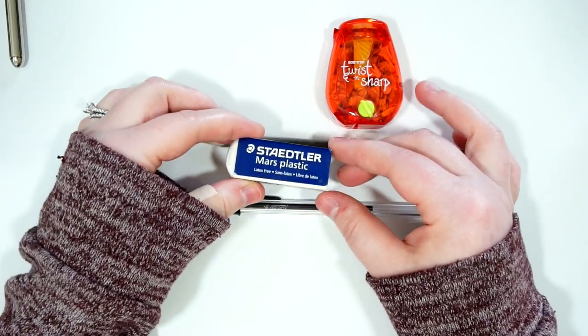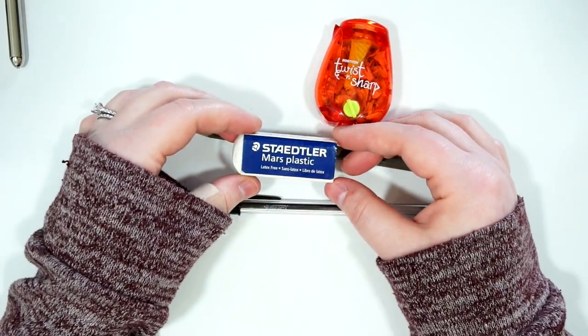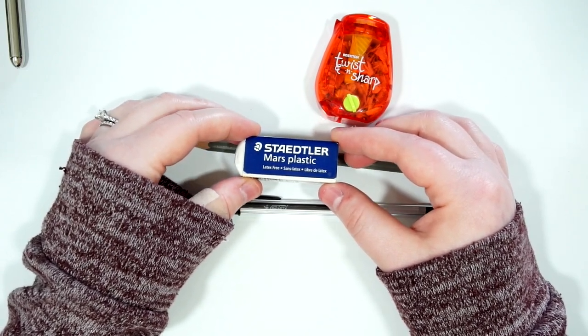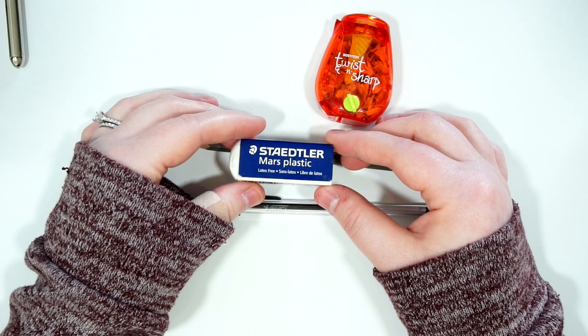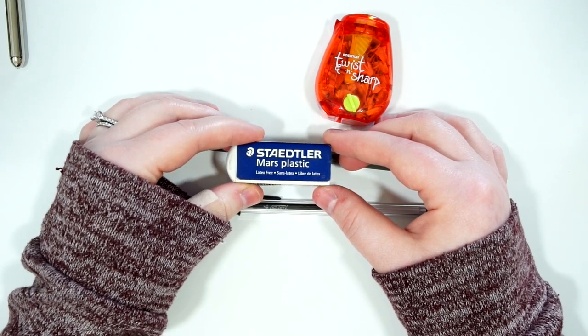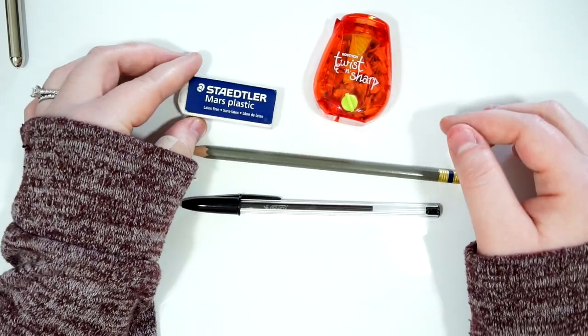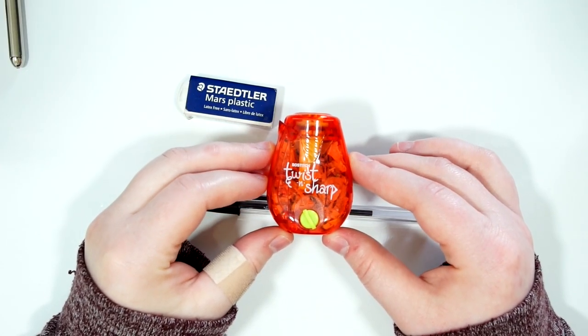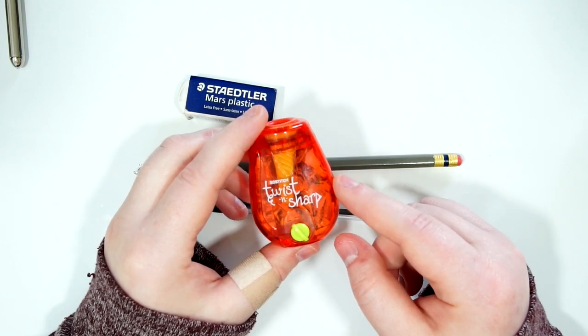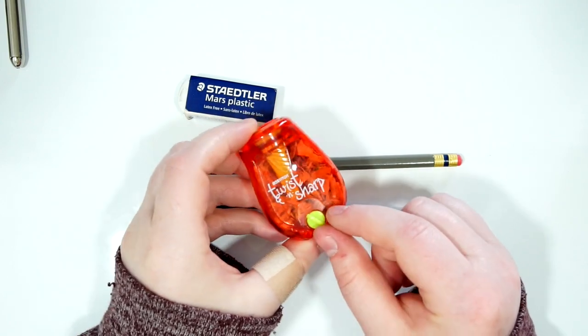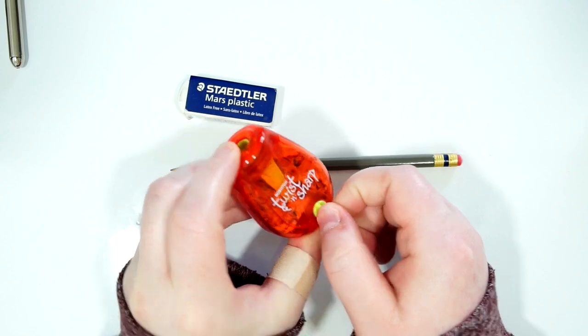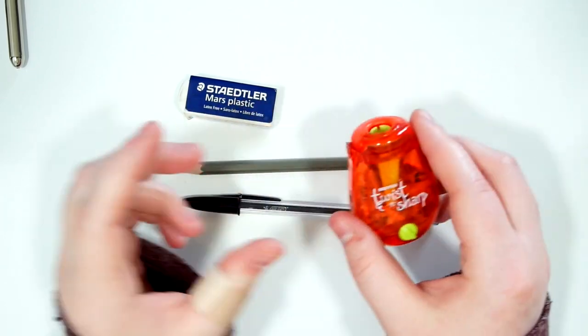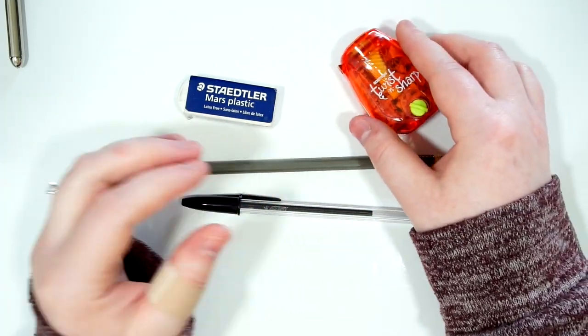For erasing my drawing, I always like to bring the Staedtler eraser. I find that this one is really great and it's super gentle on watercolor paper. I never have to worry about it ruining the tooth of paper, and that's important with watercolor paper. And then I always bring this little twist and sharp pencil sharpener. I like it because it has this little reservoir for the shavings and it also has this little twist dial that I can change the sharpness of my pencils.